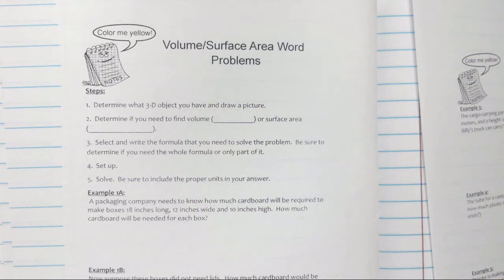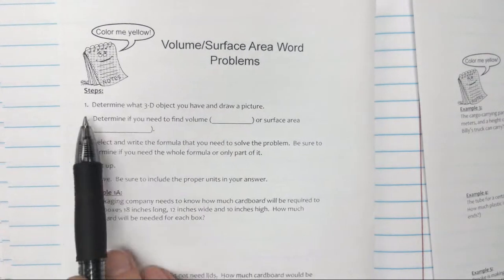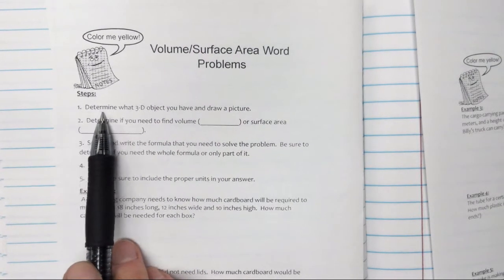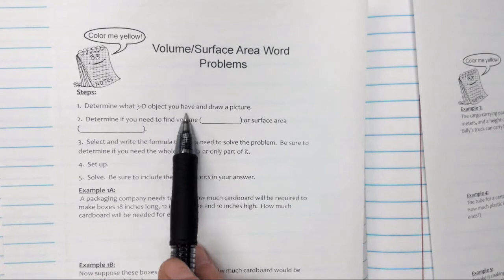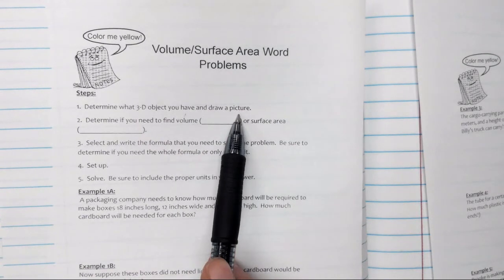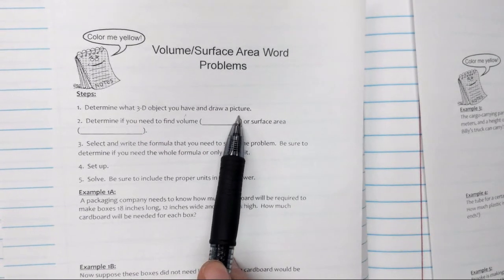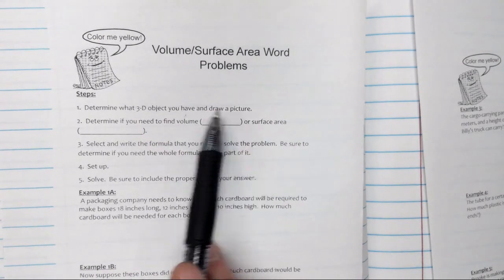In this video we're going to discuss how to solve volume and surface area word problems. We have five steps we need to follow. Number one, determine what 3D object you have and draw a picture. This will either be a cylinder or a rectangular prism.